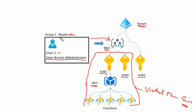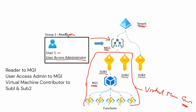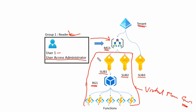The effective permissions for User1 are as follows: Reader role on Management Group1, User Access Administrator role on Management Group1, and Virtual Machine Contributor role on Subscription1 and Subscription2.